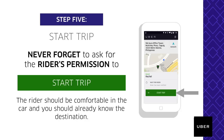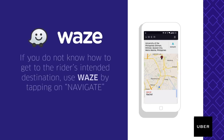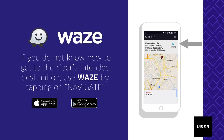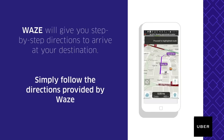At times, the rider has a destination but no preferred route. In these instances, use the Waze application, which you can install from the App Store for iOS devices or the Play Store for Android devices. Simply press the navigate button on the Uber Partner app to go to the Waze app. Remember that there are many places in Metro Manila with the same names, so always ensure the correct destination is input. Waze will give you step-by-step directions to your destination.